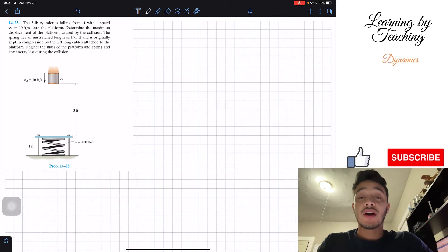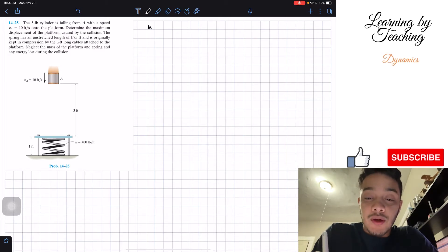As I always like to start these problems, first writing my givens. They're giving us that the weight of the cylinder is equal to five pounds, and from the weight we can calculate that the mass of this cylinder is equal to the weight divided by our gravity. The units are going to be in slugs but we don't usually write that unit down. Then we're giving the velocity, our initial velocity is equal to 10 feet per second.